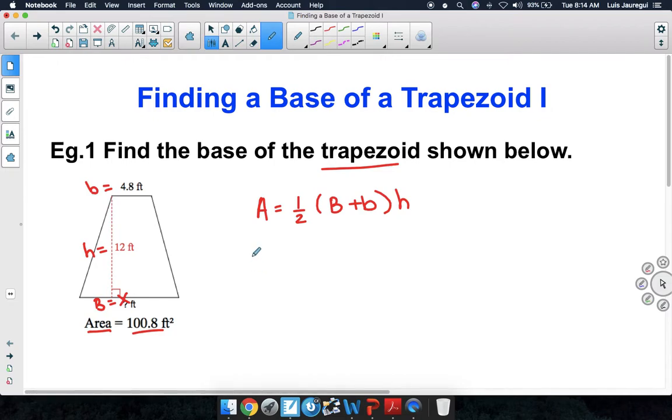Let's substitute in what we know. We know that the area is 100.8 square feet. And that should be equal to 1/2 times the sum of the two bases. Big base is x feet for now, plus little base, which is 4.8 feet. And then we're going to multiply that by the height of 12 feet.